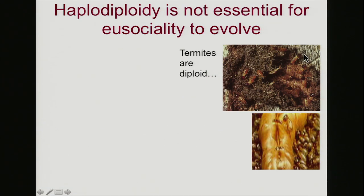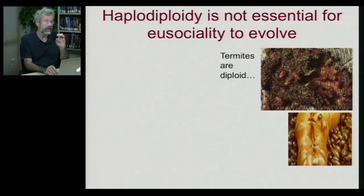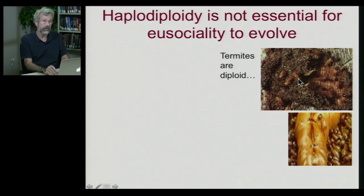Some termite workers have a kind of nozzle on the end of their face and they squirt enemies with a poison to chase them off. Other workers may have big mandibles. Others are focused entirely on tending to the nest. So you have a very complex society of termites, just like you do with ants and bees.